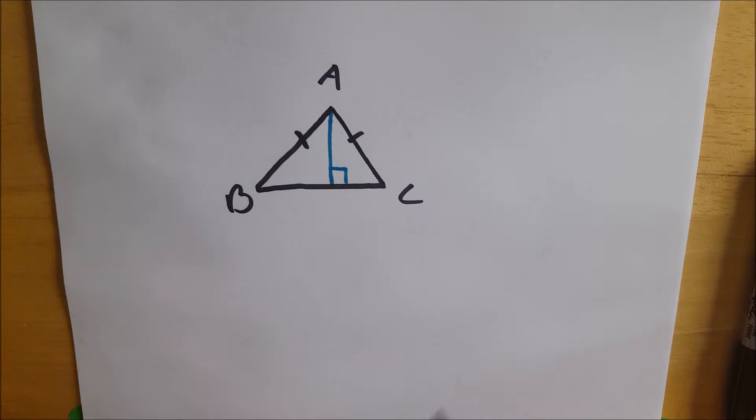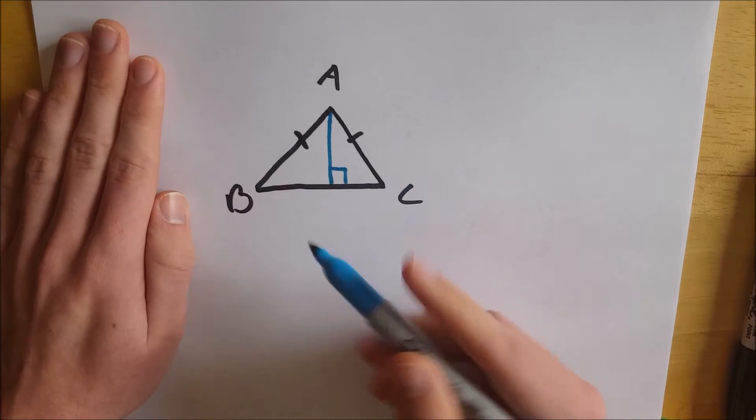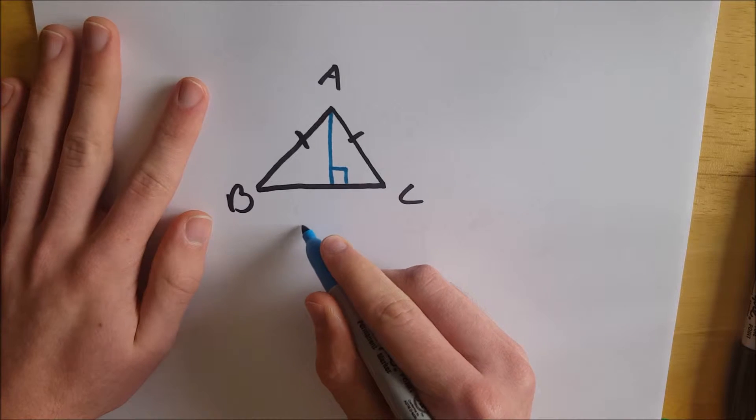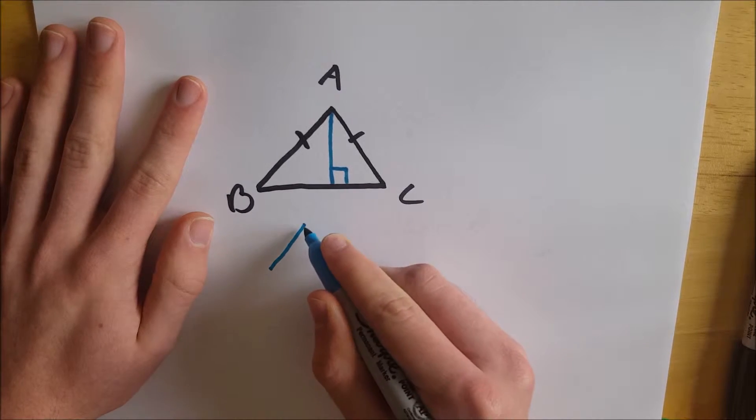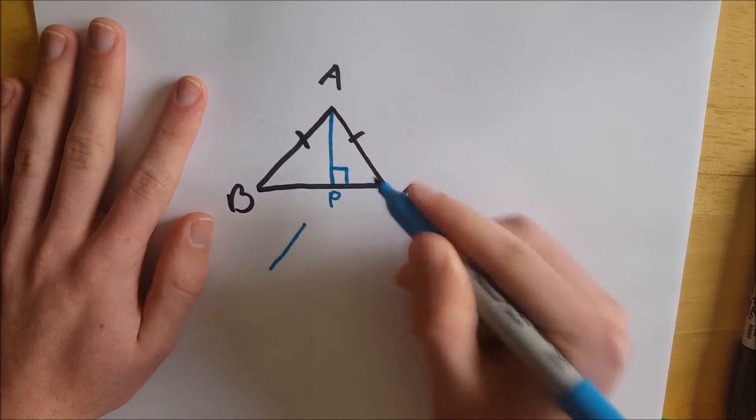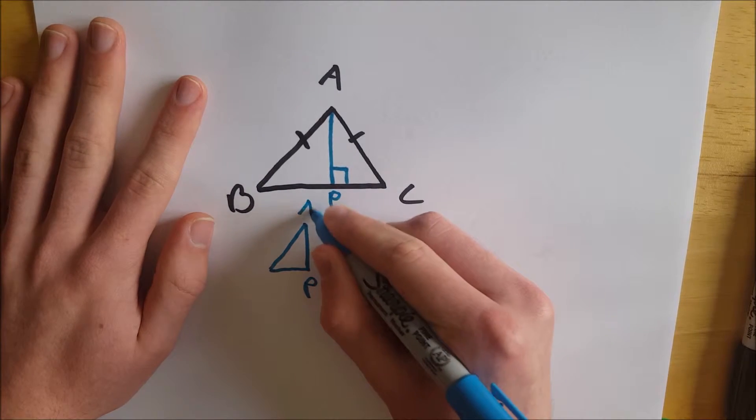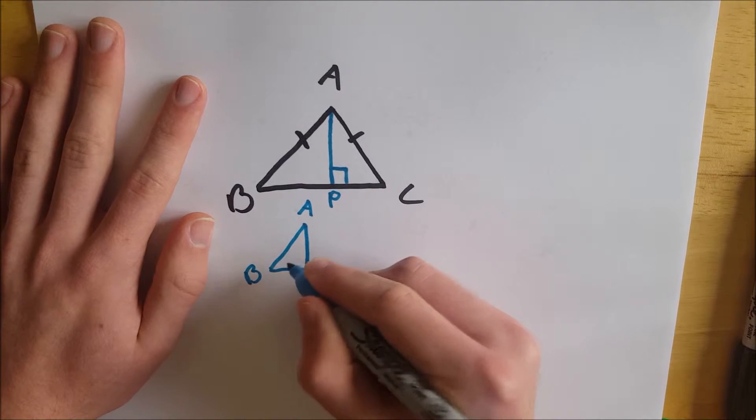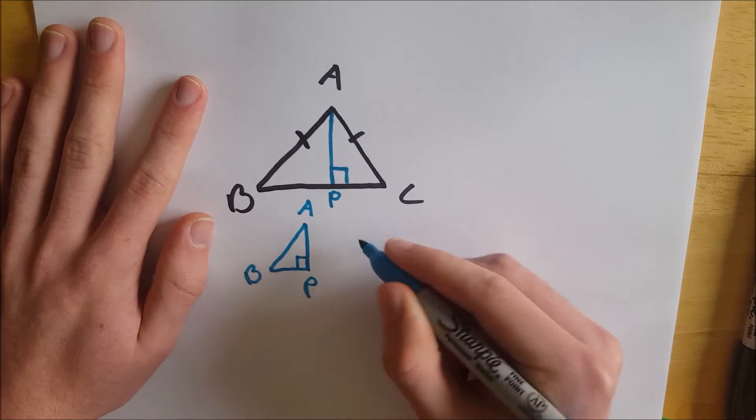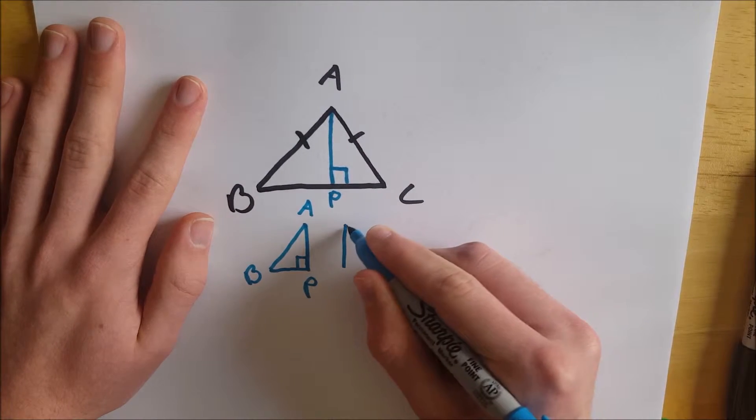Of course they don't look congruent because I've done a poor job sketching it but now we know that this triangle AB, we're going to call this point P. So now this right triangle ABP that we've just cut is congruent to triangle ACP.